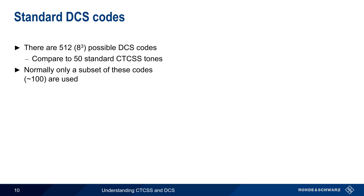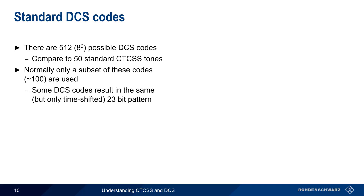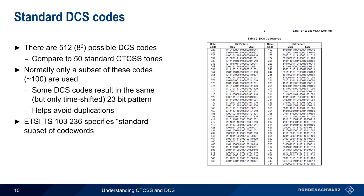The main reason for this is that different DCS codes can result in the same 23-bit pattern, only shifted in time, so a careful selection of DCS codes can help to avoid the potential of duplications. ETSI TS 103-236 specifies a subset of DCS codes to use, but in practice, many manufacturers make their own decisions about which subset of DCS codes they support.